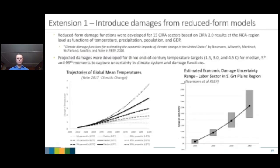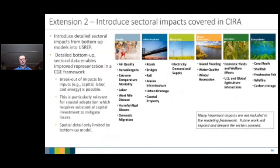Looking at extensions: one extension is to introduce damages from reduced-form models — work by EPA and Industrial Economics published in a RE paper in 2020, led by Jim Newman, which develops reduced-form damage functions for 15 sectors and uncertainty bands across different levels of mean warming. An extension would incorporate different temperature trajectories and expand the number of impacted sectors.